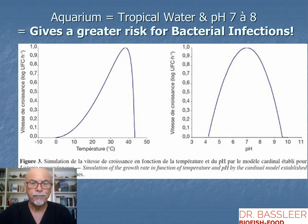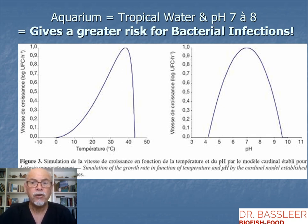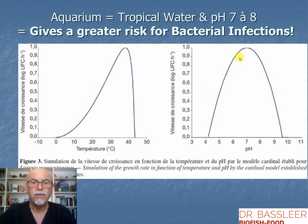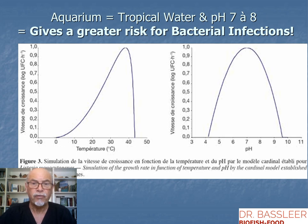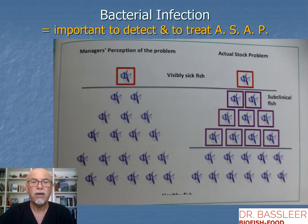Our aquaria are usually in tropical water with a pH of 7 to 8, and that means there is a very big risk for bacterial infections. Why? Bacteria love to grow in higher temperatures and in a pH of 7 to 8. These are environments where bacteria — including pathogenic bacteria that can cause infections — do very well.